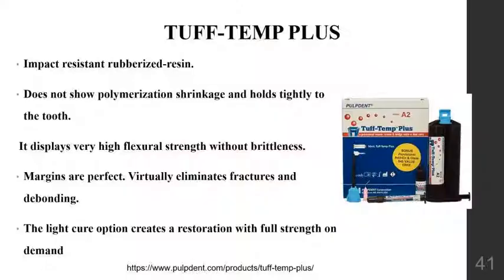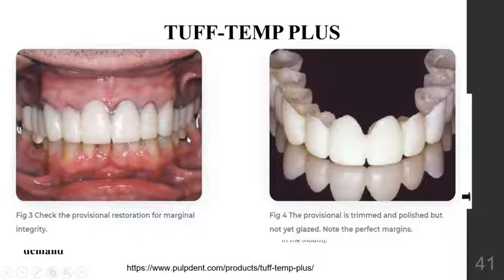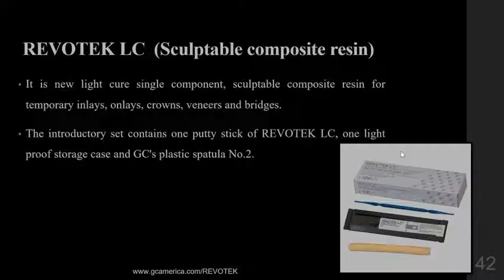Tough Temp Plus is an impact-resistant rubberized resin that shows no polymerization shrinkage and displays high flexural strength. For the procedure, the matrix is filled with Tough Temp Plus material and seated in the mouth. After two minutes it is removed, the matrix is removed, and margin integrity is assessed. The provisional is then trimmed and polished, and cemented. When these temporaries were removed after four weeks, the tissue was in excellent condition.